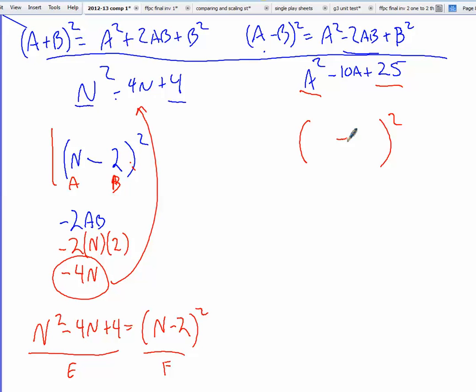So if this is a perfect square binomial, what would the square root of a squared be? A. What's the square root of 25? Five. All right. So that part isn't too hard.